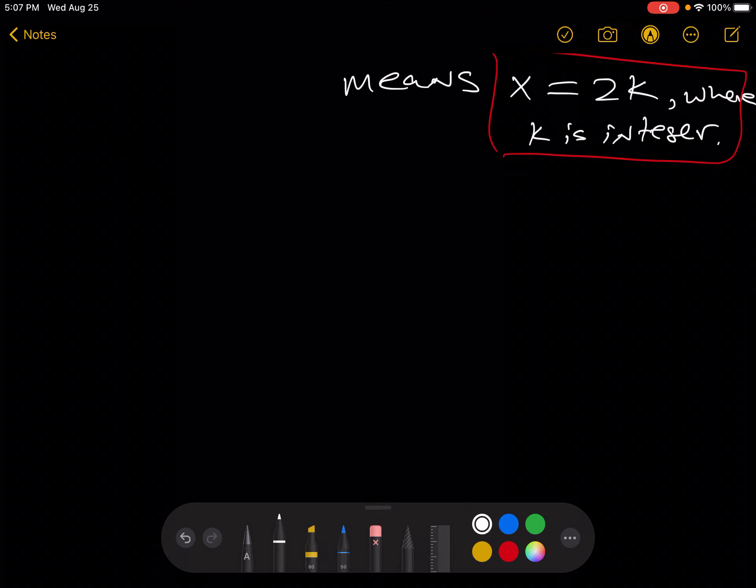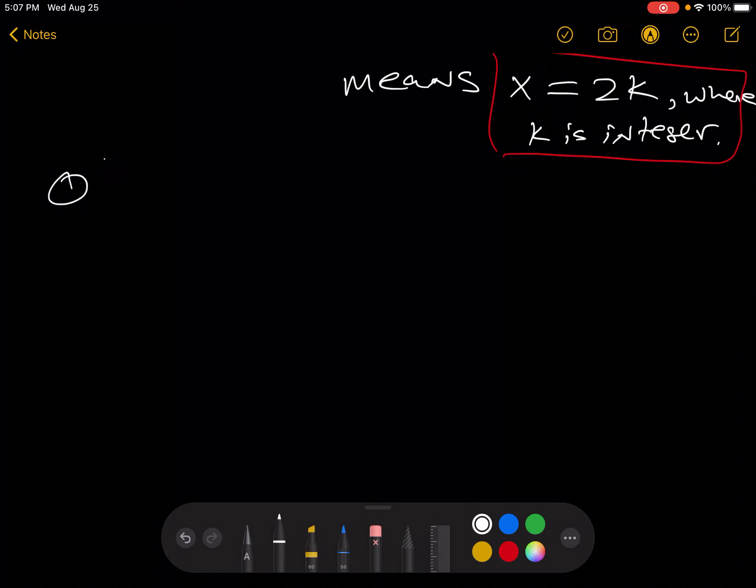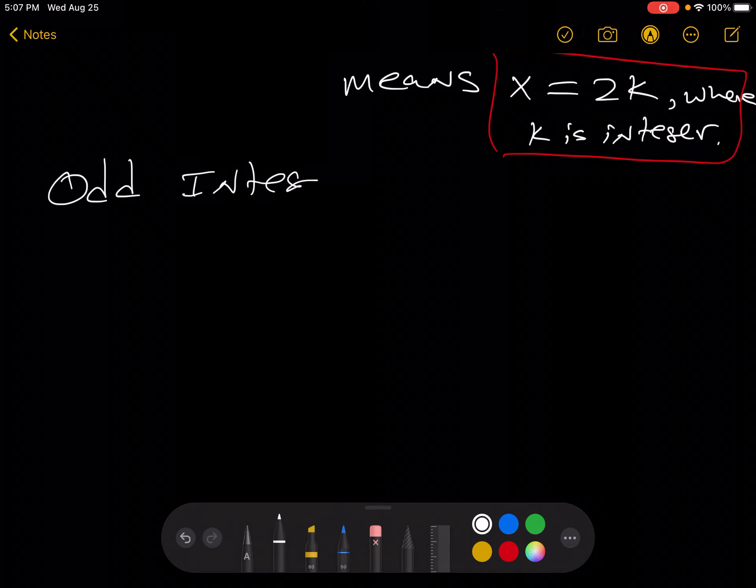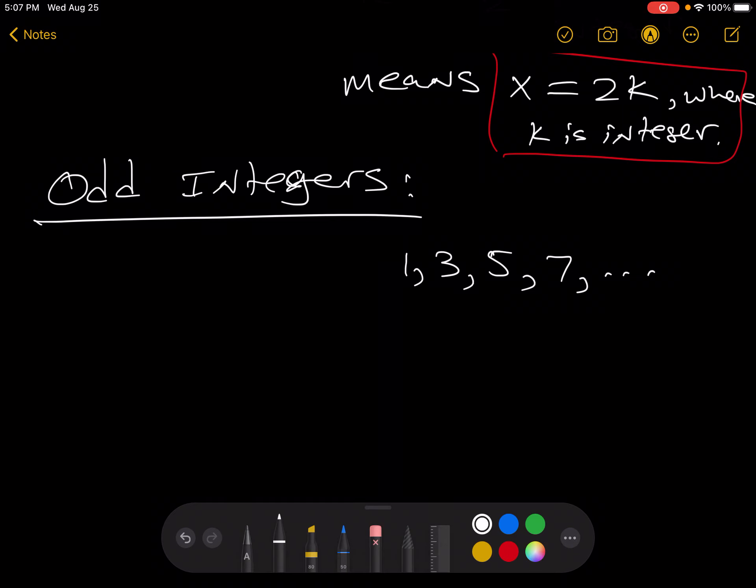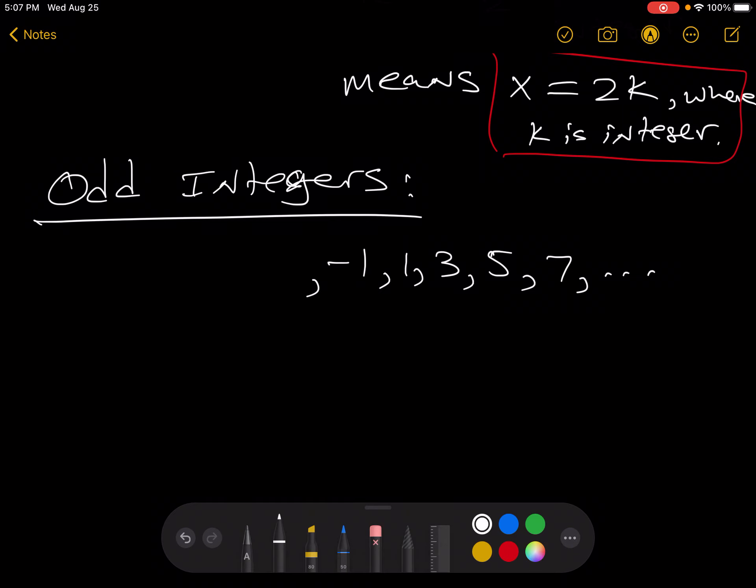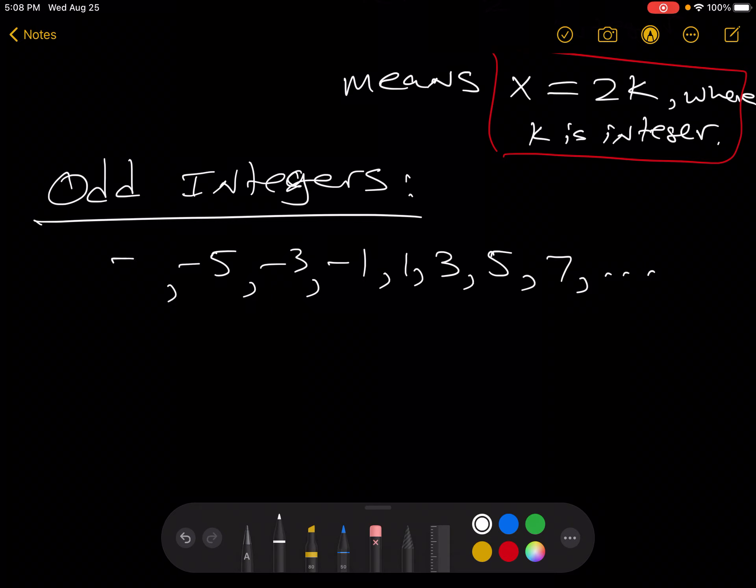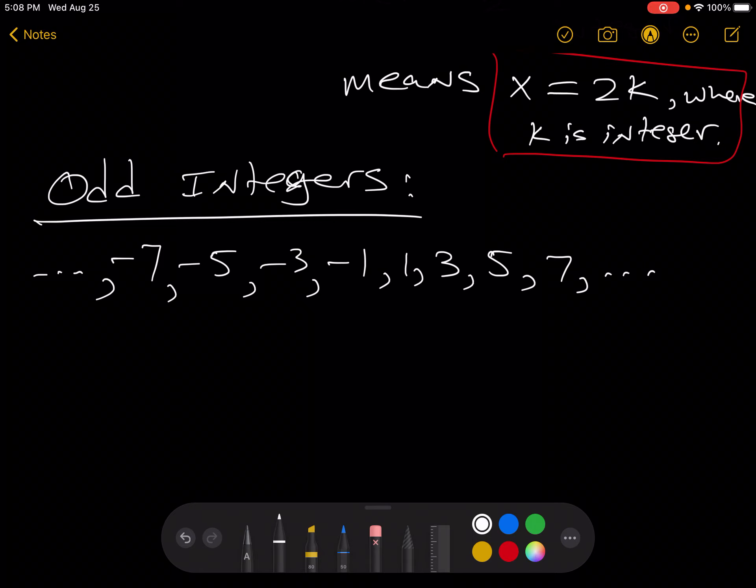Now let's think about the odds. Odd integers. What are the odd integers? We've got 1, 3, 5, 7, and so on. We've got negative 1, negative 3, negative 5, negative 7, and so on. Those are the odd integers.